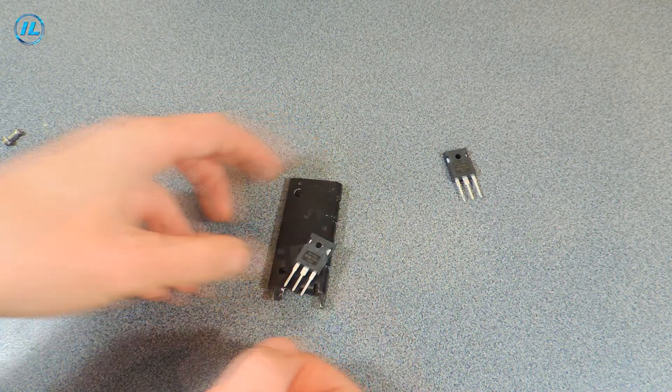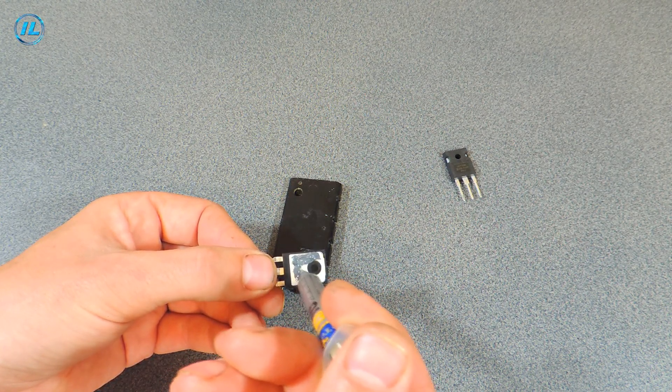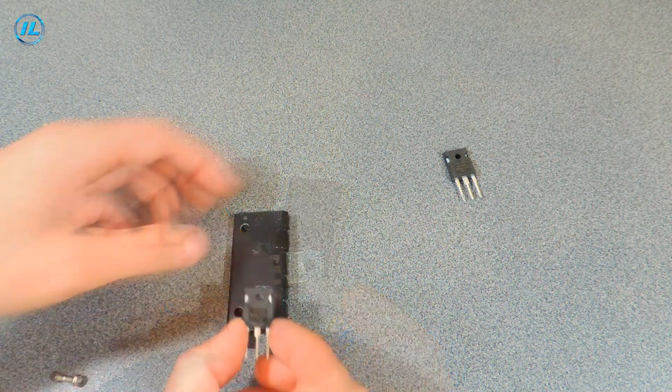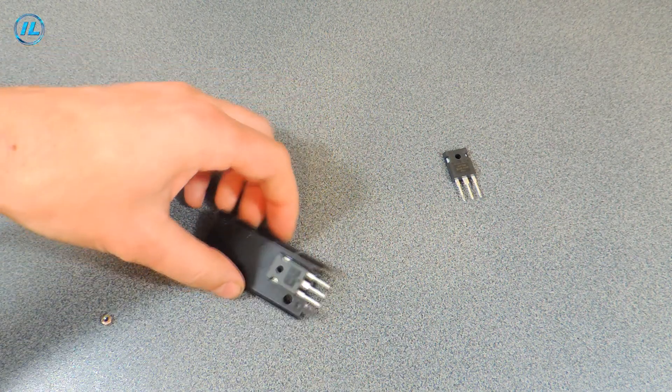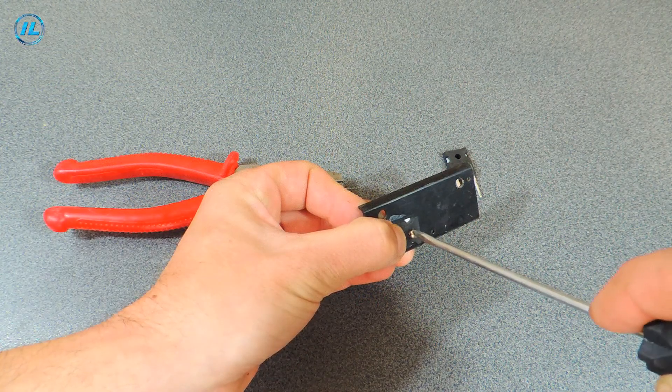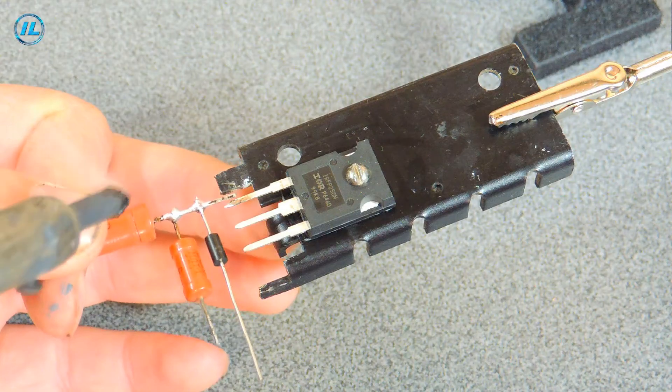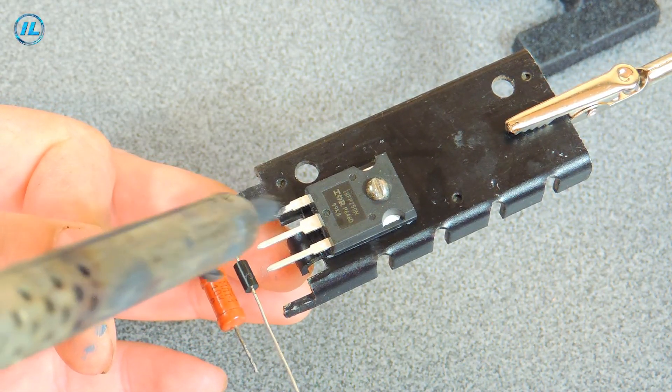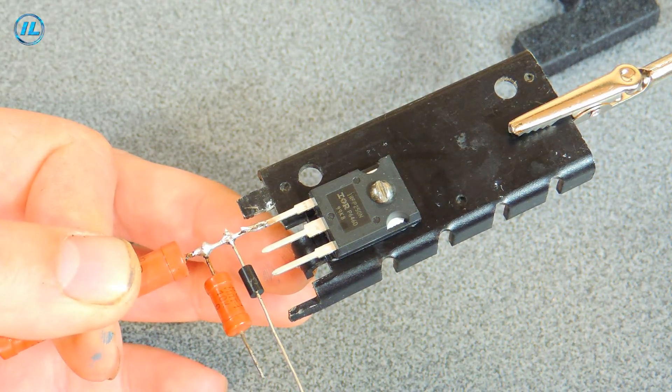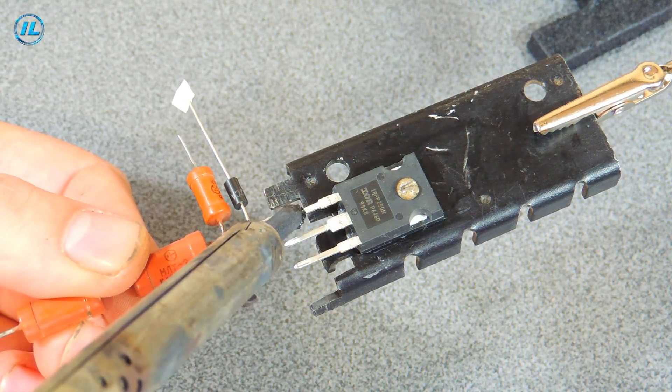The transistors in this circuit should not get very hot, but just in case, I will fix them on small radiators. Now I will solder this entire structure to the IRF 250 field effect transistors.